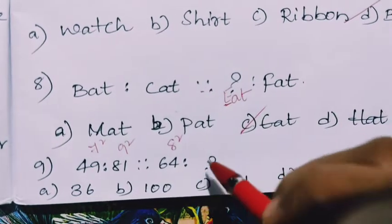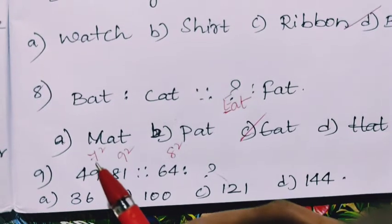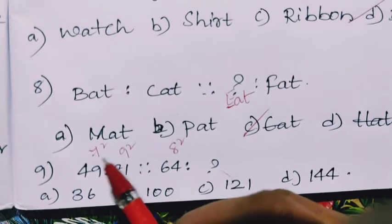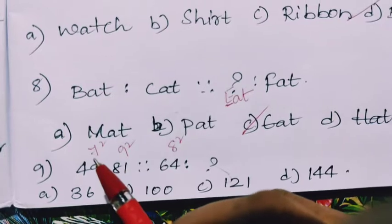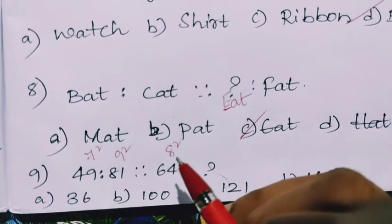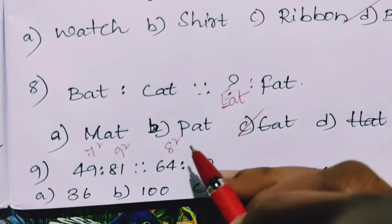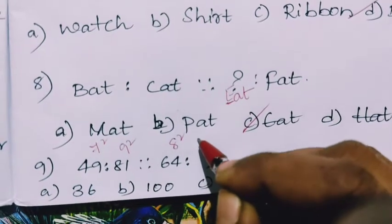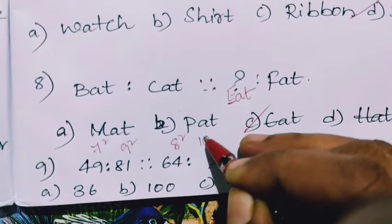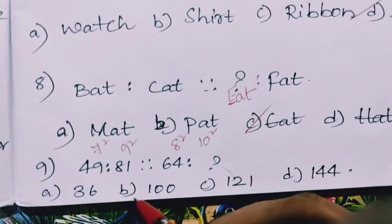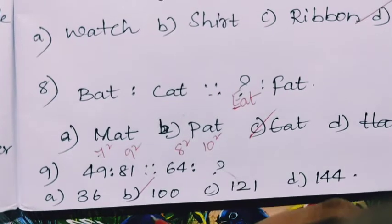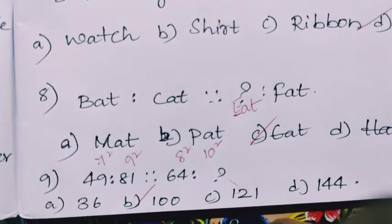So what should be here? When you look at these two, these two are odd numbers and they are squares. Here it is the even number, alternate. So the next even number after 8 is 10, so 10 square will be 100. So this is one more type of question.